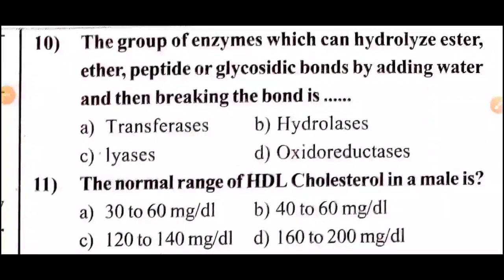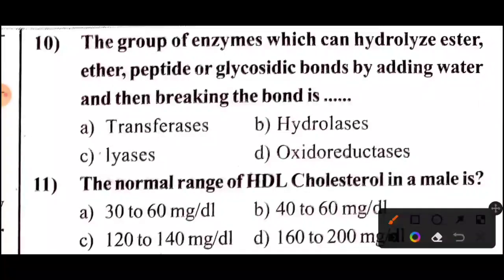Question 10: The group of enzymes which can hydrolyze ester, ether, peptide, or glycoside bonds by adding water and then breaking the bonds. Options A, B, C, D. The answer is option B, hydrolases.